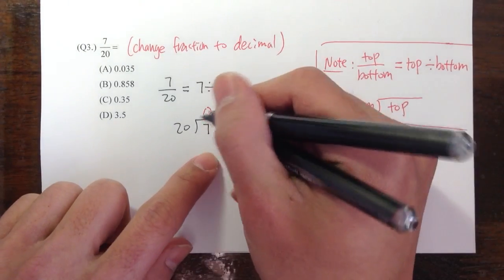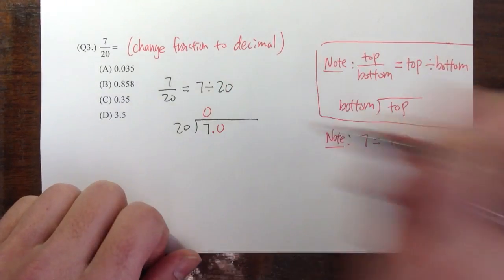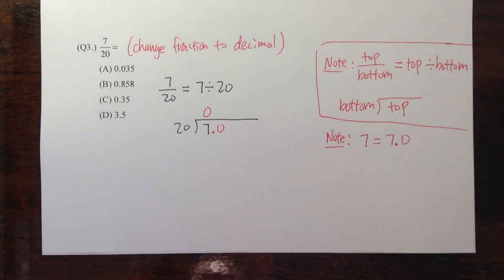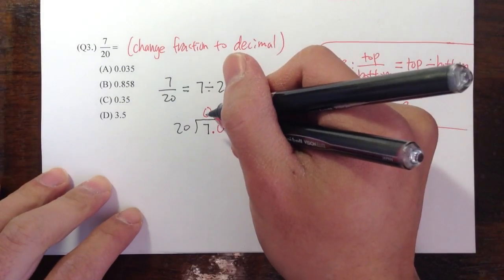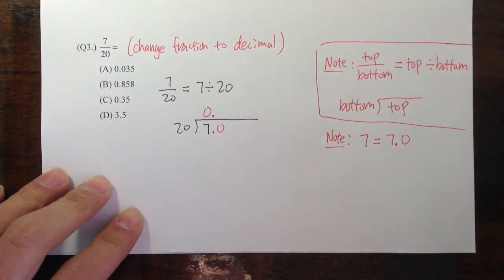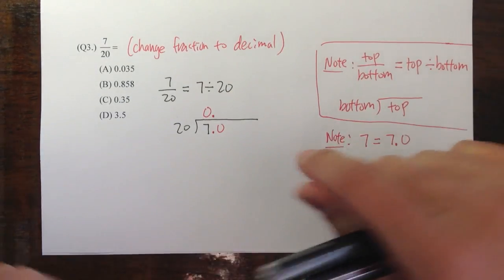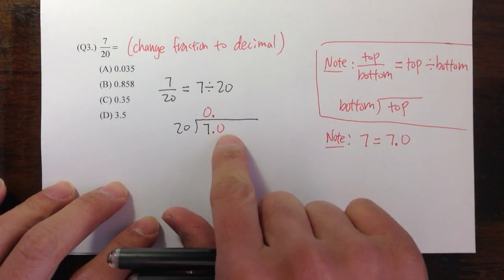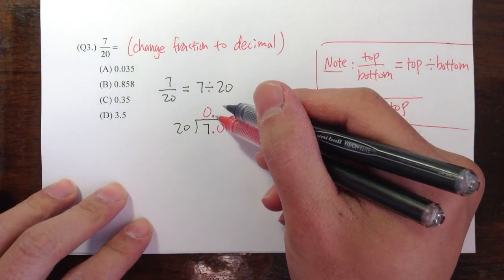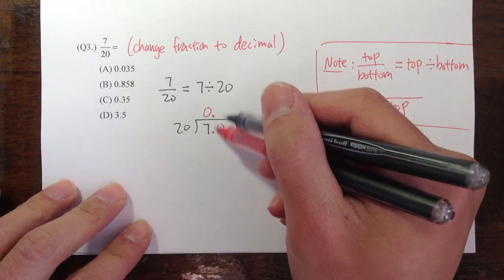So for this one, I can write this as 7.0, and then line up the decimal point for the answer. Let's do that right now before we miss that later on. So put a zero, 7.0, and then on the top, also put a decimal point, line up with the decimal point.